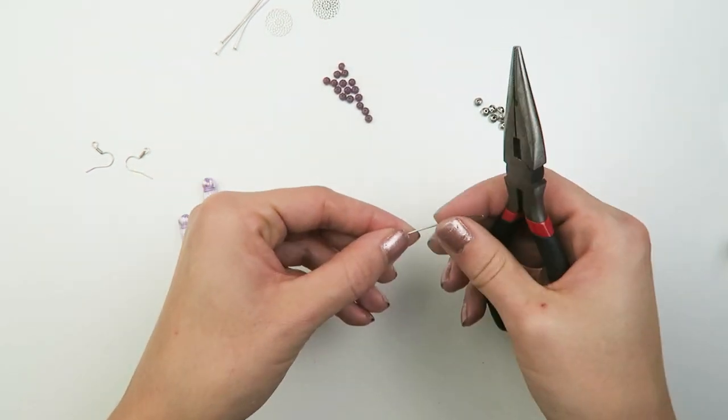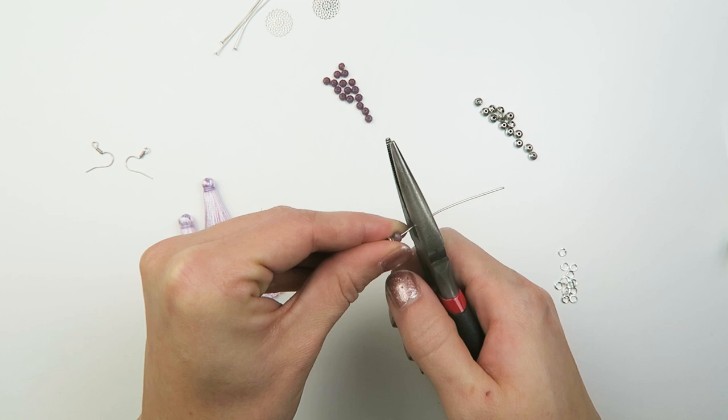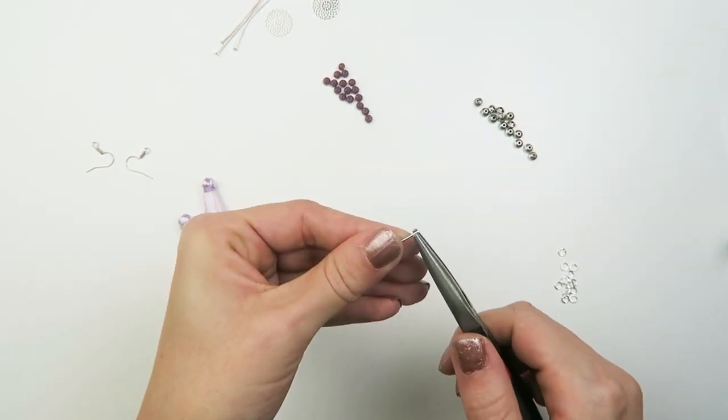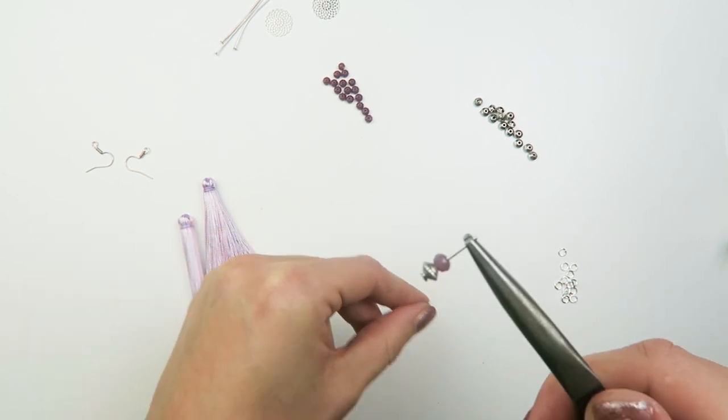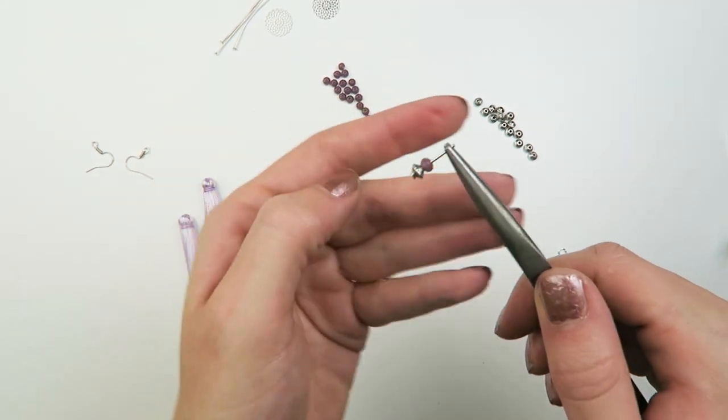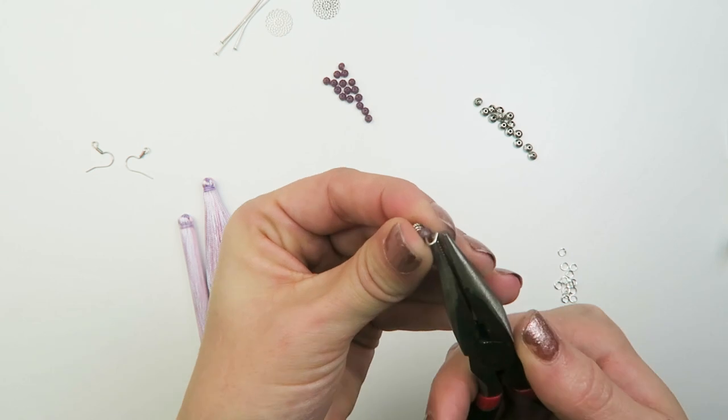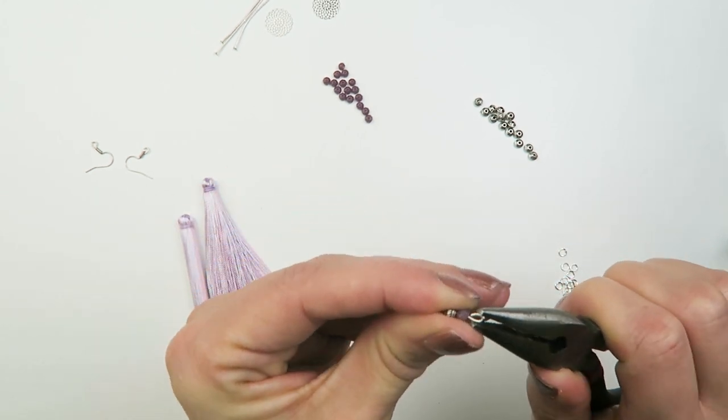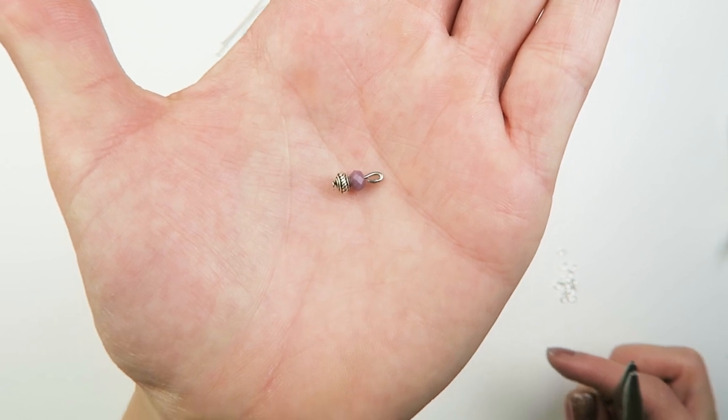And then I'm going to cut off my head pin a little bit less than one centimeter above my bead. So I'm going to cut it off like this. Put it between your pliers and then just fold it around your pliers to make a small eye. And then close it again. And then it looks like this.